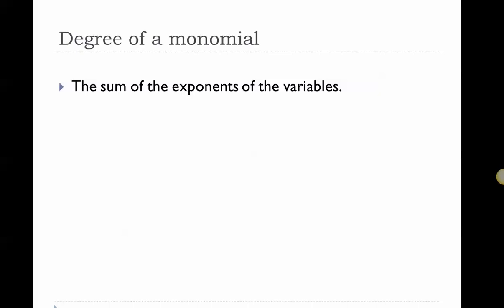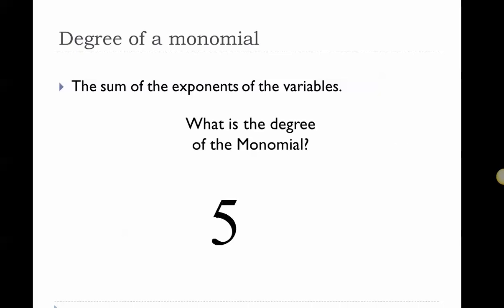The degree of a monomial is defined as being the sum of the exponents of the variables. Now, in the last video we talked about what a monomial is — polynomials and how we get individual monomials that are separated by a plus or minus. The degree is going to be looking specifically at the exponents, but only the exponents of the variables. So let's look at a couple of examples.